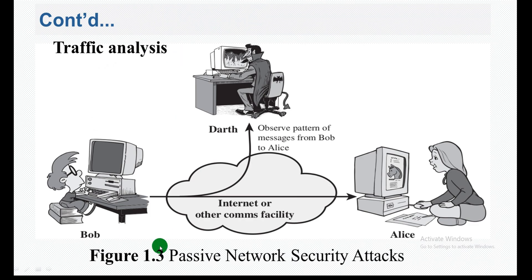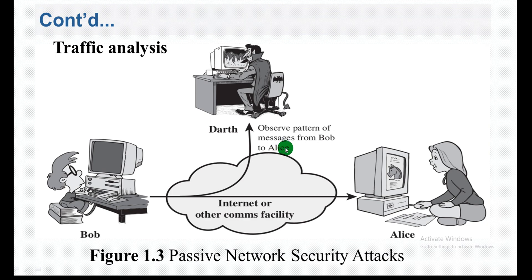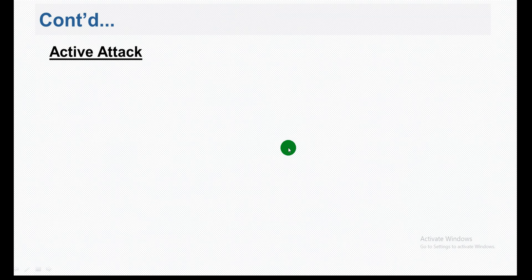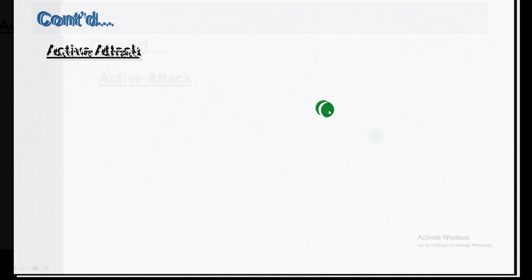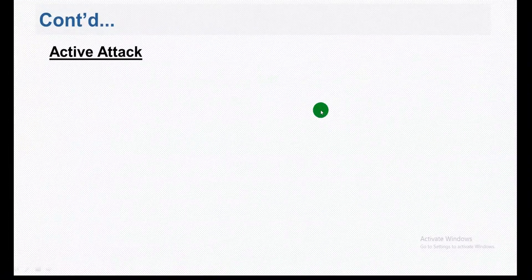The second passive attack type is traffic analysis. In traffic analysis, the attacker observes the pattern of messages from Bob to Alice. Even if the content is not readable, the attacker can analyze the pattern to understand communication behavior. This covers the release of message content and traffic analysis as passive attack categories.